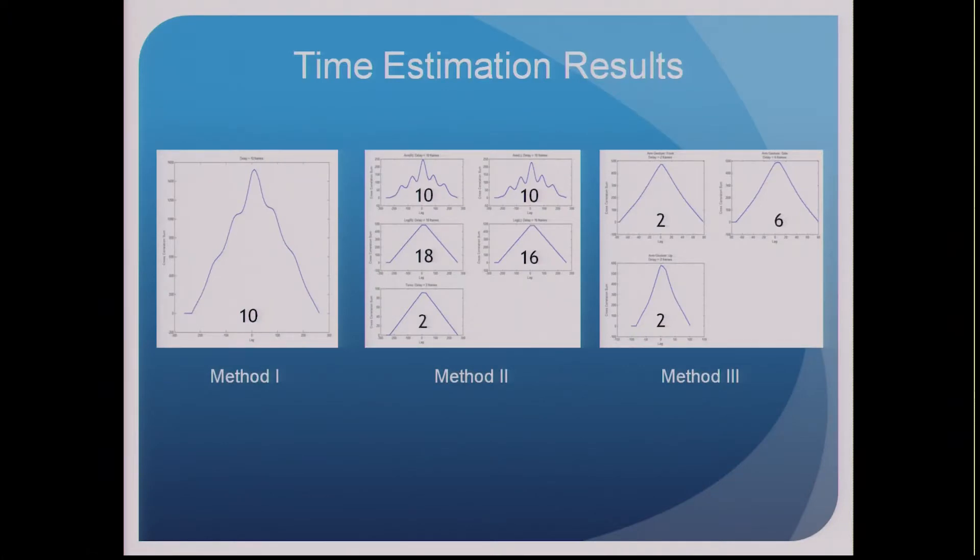Now we can jump back to our issues with latency. And so here are the results of every single time estimation. The numbers on the screen represent the different estimated delays. And so if we can see in the second figure under method two, it's quite possible that every single body part can have a unique delay. At the same time, for the third gesture, different gestures can have different latencies.